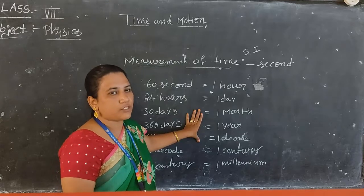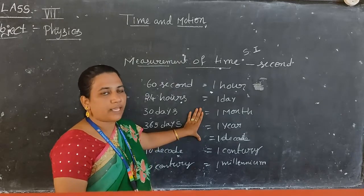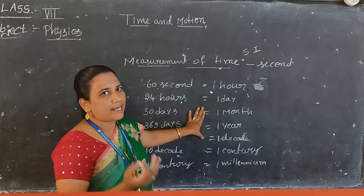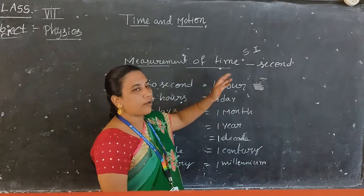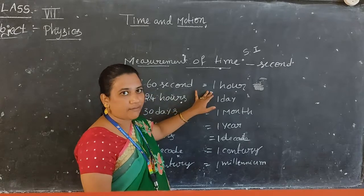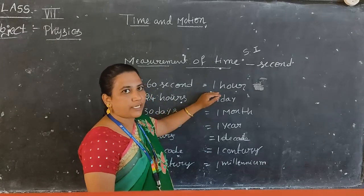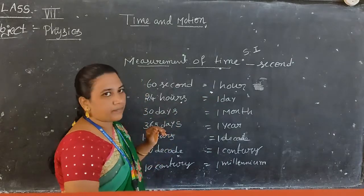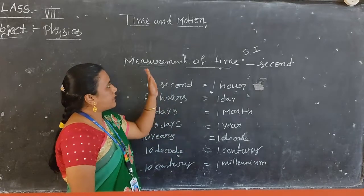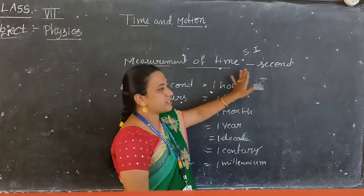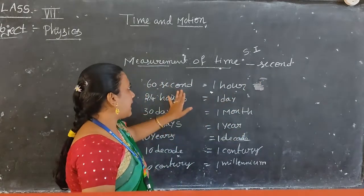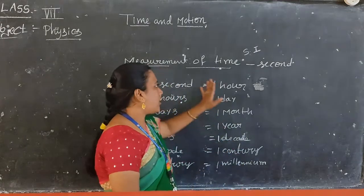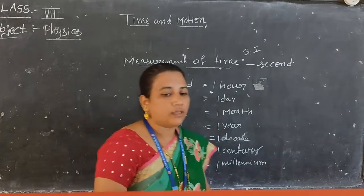In this chapter we have some problems related to how we can calculate time, and we will discuss how to convert one unit to another unit. For example, how can we convert 10 seconds into hours? Or how can we convert 2 hours into seconds? The SI unit of time is second, but other units also exist: hours, days, months, years, decades, centuries, and millennium.